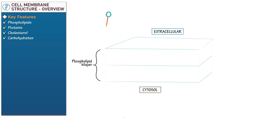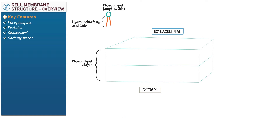Draw a phospholipid as a round circle with a pair of tails extending from it. Label it as amphipathic, meaning that it has both hydrophilic and hydrophobic components. Indicate that the tails represent fatty acids and that they are hydrophobic, meaning that they fear water. Label the round circle as the hydrophilic head, meaning it has an affinity for water, and indicate that it links to the hydrophobic tails with a phosphate group — the 'phospho' in phospholipid.